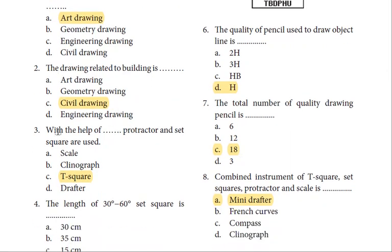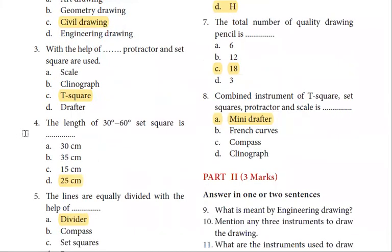Next question. With the help of protector and set square are used. To find a length of 30 to 60 degree set square. You can determine length 25 cm. 45 degree set square.